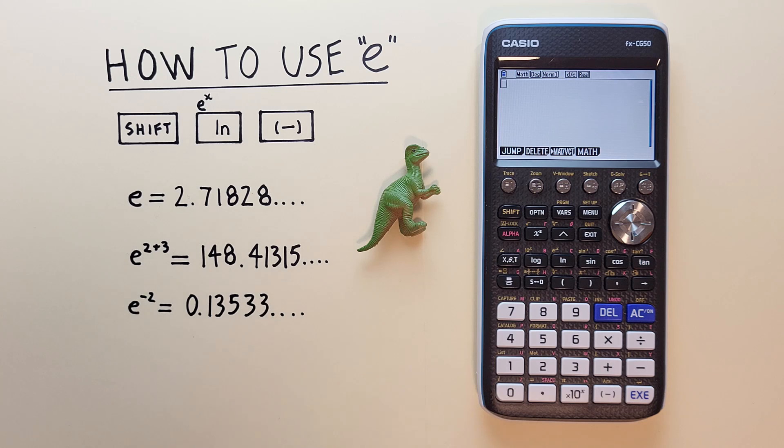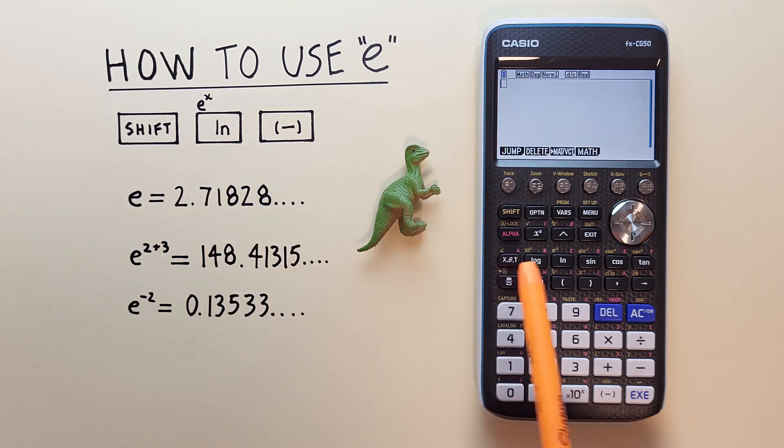To do this, we'll use the shift key that looks like this, located here. The ln, or natural log key, with the shift function of e to the exponent, that looks like this, located here. And the negative key, that looks like this, located down here.